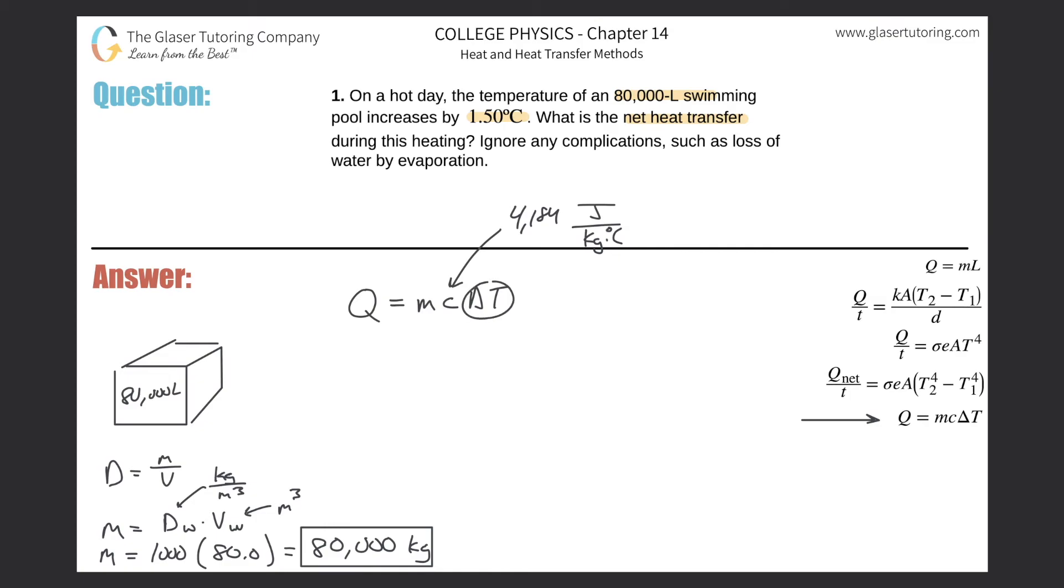And then the change in temperature—that's always final minus initial. In this case we don't have a final and initial; we just have the overall change. It has increased by 1.5 Celsius, so that is the change.